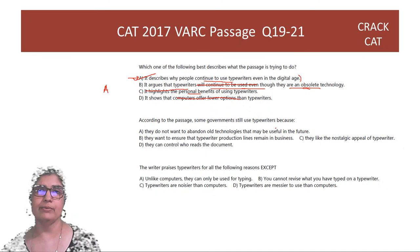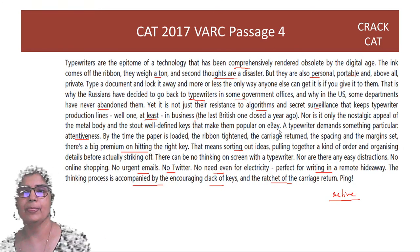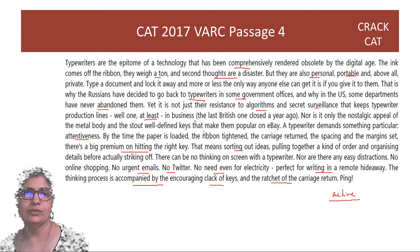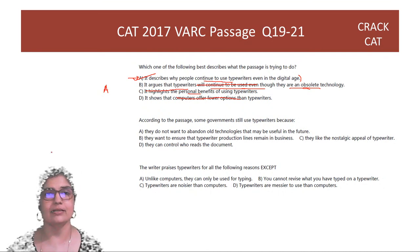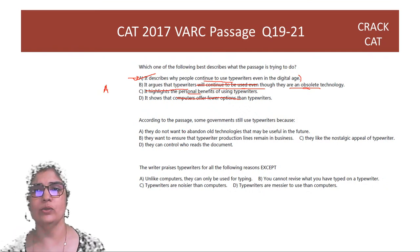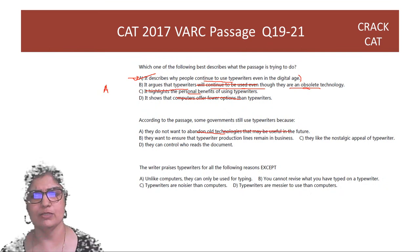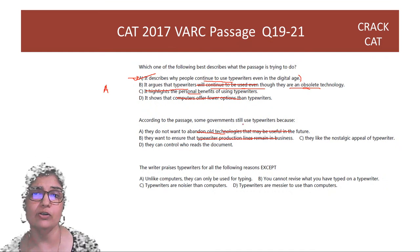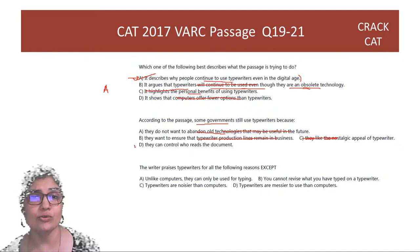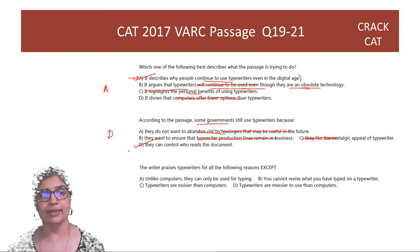Question: Why do some governments still use typewriters? Because if you type a document and lock it away, nobody can access it — that's complete privacy. Nobody can access a document you've typed unless you give it to them. Options about abandoning old technologies and nostalgic appeal are wrong. The correct answer is that they can control who reads a document — option D.